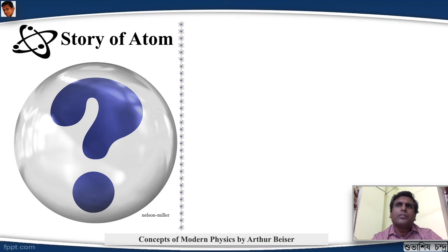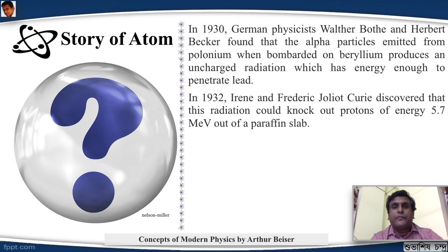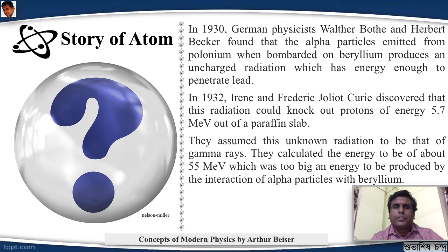In 1930, German physicist Walther Bothe and Herbert Becker found that the alpha particles emitted from polonium, when bombarded on beryllium, produces an uncharged radiation which has energy enough to penetrate lead. This couldn't be explained using the existing atomic model. In 1932, Irene and Frédéric Joliot-Curie discovered that the radiation could knock out protons of energy 5.7 MeV out of a paraffin slab - that was a huge energy. They assume this unknown radiation to be that of gamma rays. So the gamma rays was supposed to be having energy of about 55 MeV, but that kind of an energy was not possible from interaction of alpha particles with beryllium.